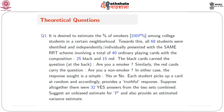Exercise Question 1: It is desired to estimate the percentage of smokers among college students in a certain neighborhood. All 68 students were identified and individually presented with the same RRT scheme involving a total of 40 ordinary playing cards with composition 25 black and 15 red. The black cards carried the question at the back: "Are you a smoker?" The red cards carried: "Are you a non-smoker?" In either case the response is yes or no. Each student picks up a card at random and provides a truthful response. Suppose altogether there are 32 yes answers from the two sets combined. Suggest an unbiased estimator for capital P and provide an estimated variance.